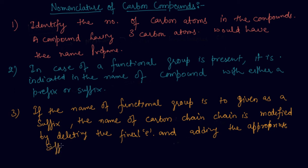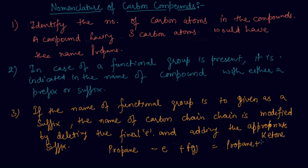For example, a three-carbon chain with a ketone group would be named as: propane minus 'e' plus the functional group suffix. So for ketone, we remove the 'e' from propane and add 'one', giving us propanone.